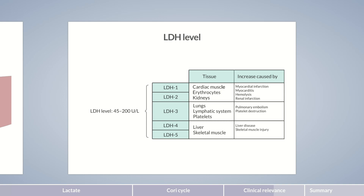Also, levels of LDH3, 4, and 5 may be increased in malignancy. However, since LDH levels have poor specificity, they're not widely used in clinical practice for an accurate diagnosis. Accordingly, in cases of elevated LDH, other organ-specific parameters are measured for clarification, rather than determining the affected isoenzymes. Besides that, the various LDH isoenzymes are degraded at different rates, which need to be considered in LDH analysis.